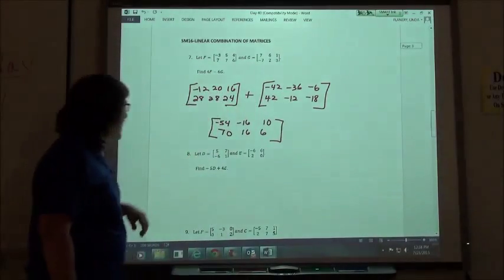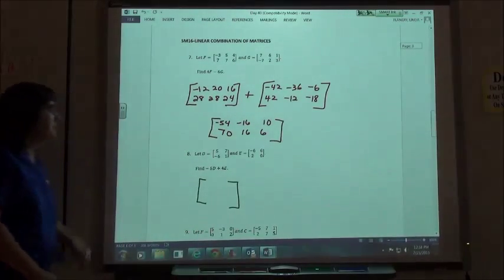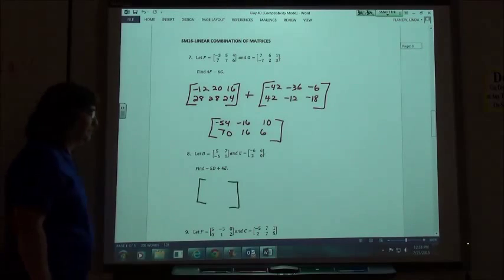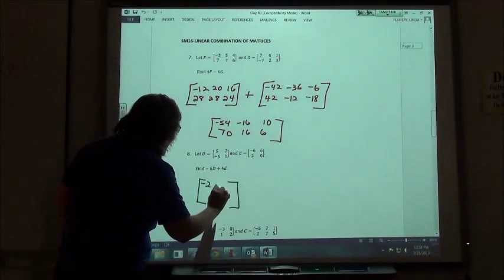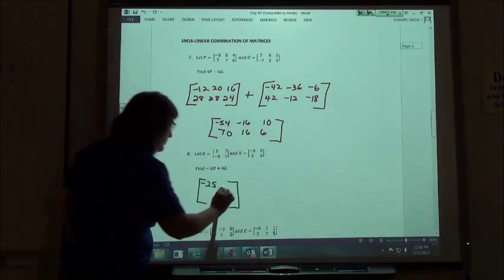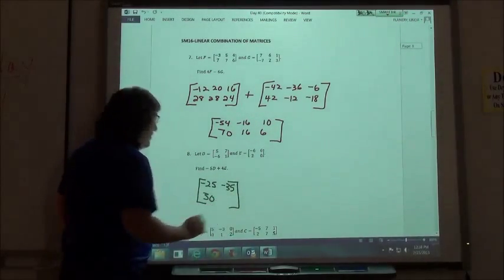So on number 8, if we take D times negative 5, we would take D times negative 5, E times negative 5.